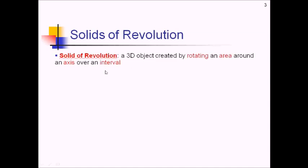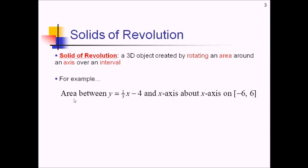Let's define what we mean by a solid of revolution. This is a three-dimensional object created when we rotate an area around an axis over an interval. For example, let's say that we take the area between y equals one-third x minus four, shown in the graph below, and the x-axis, and rotate it over the x-axis on the interval from negative six to six.